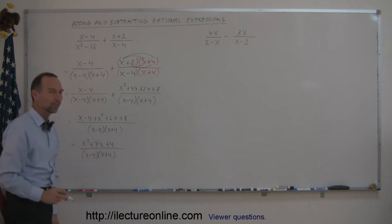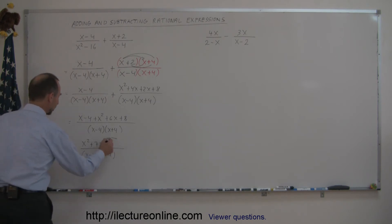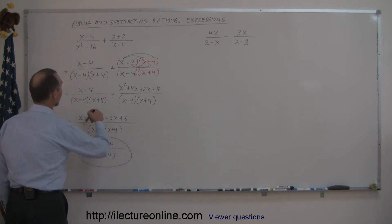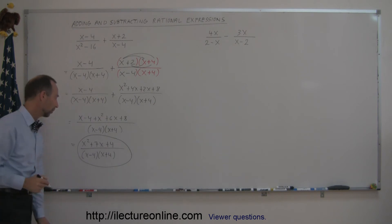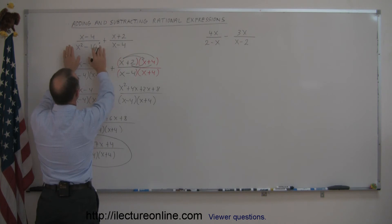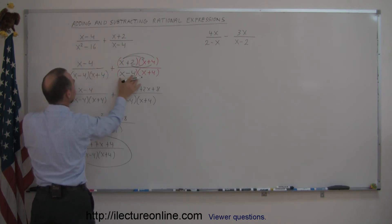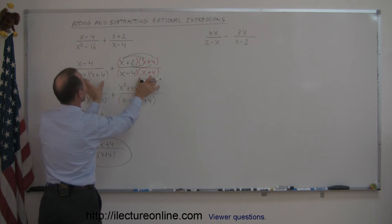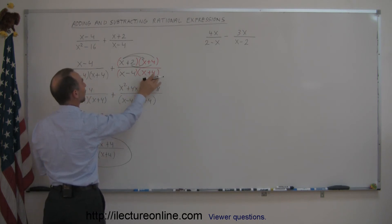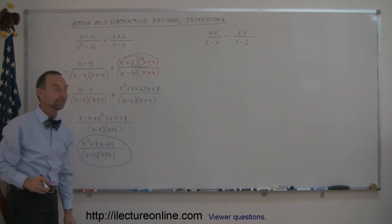Sometimes you can factor the numerator, but that's typically not necessary, so we can call this the final answer — the sum of those two rational expressions. Always make sure you get the same denominator. If you factor first, you can easily see what you're missing. You already have the x minus 4 but you need the x plus 4, and by multiplying the denominator by x plus 4, you must do exactly the same to the numerator.